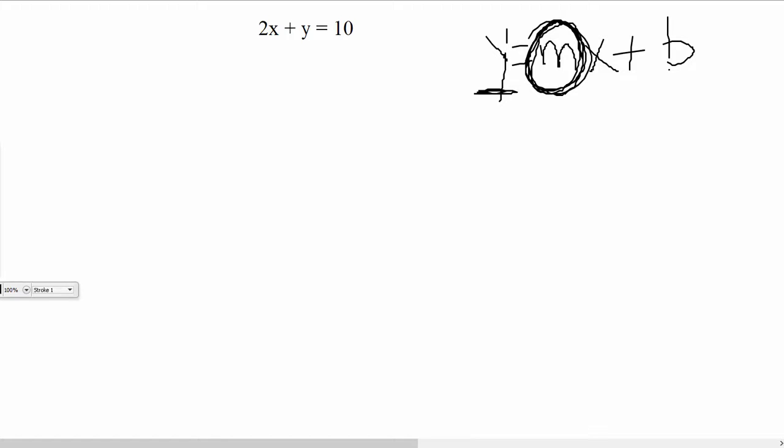But first, it needs to be in this form, which means I need to solve for y and get that y all by itself. So for this particular equation, it's not that bad getting y all by itself. Here's y. In order to get it by itself, I need to get rid of the 2x. That 2x is positive, which means I'm going to do the opposite and subtract it away.